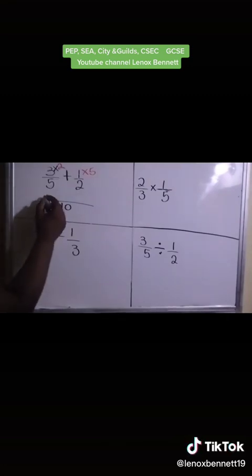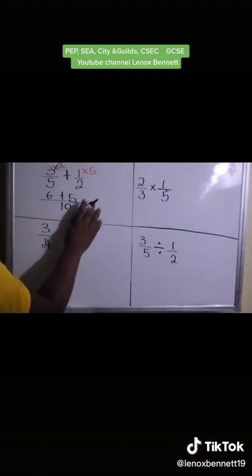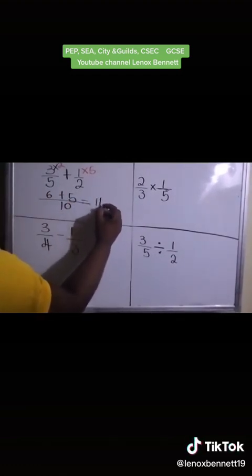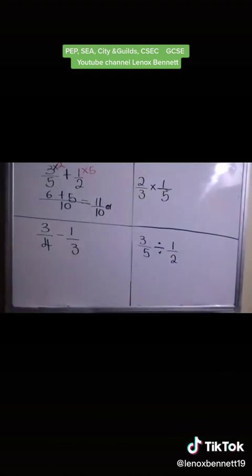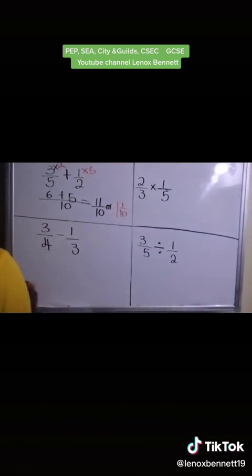So 3 times 2, that is 6 plus 1 times 5, that is 5. And then we have the same denominator now. So we can go ahead and add. So 6 plus 5 is 11 over 10. Or we can say 10 into 11 goes 1 time. That remains 1 over 10.